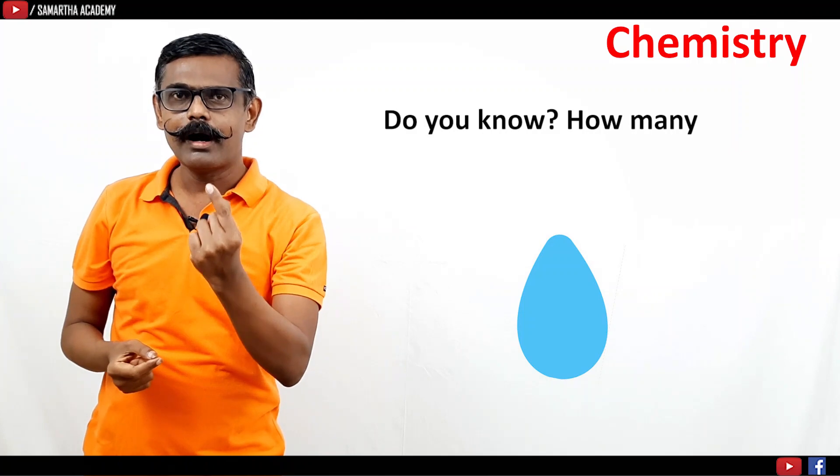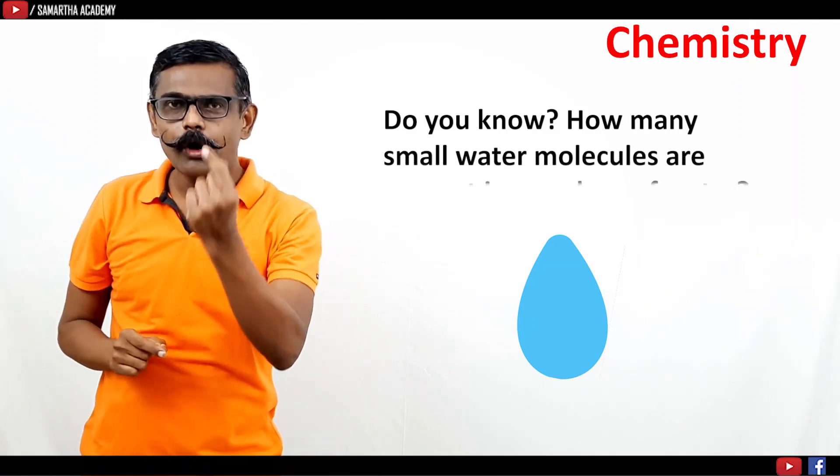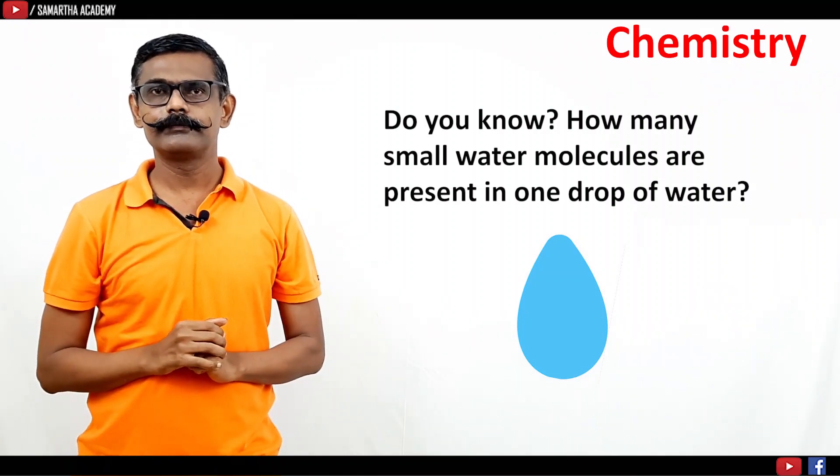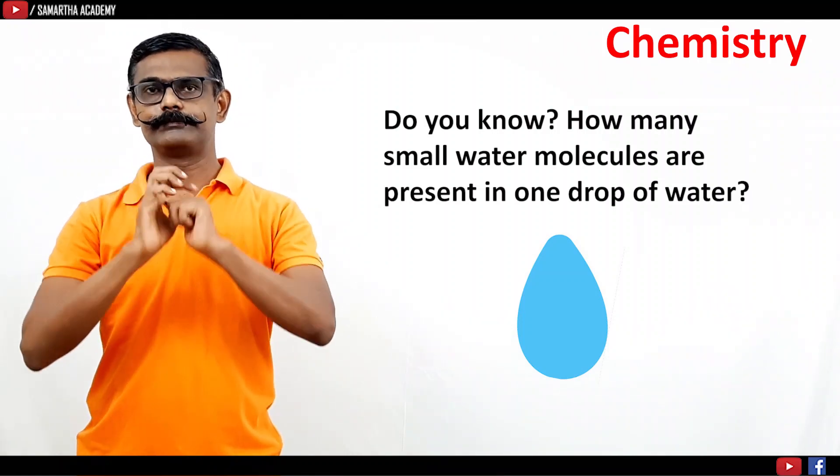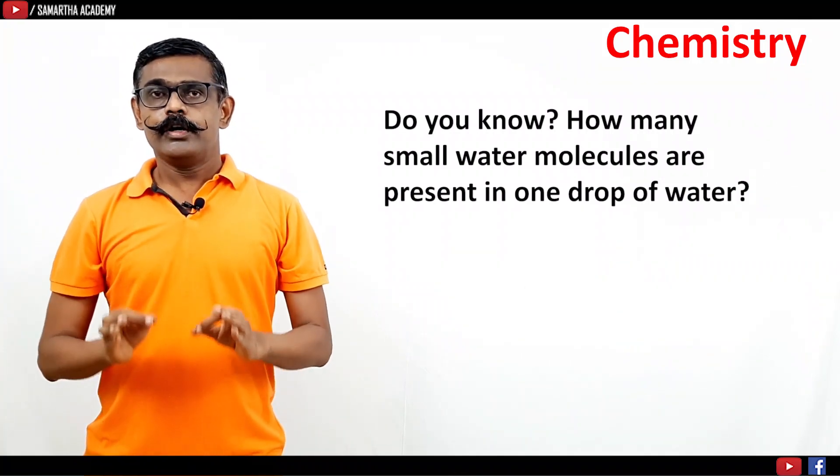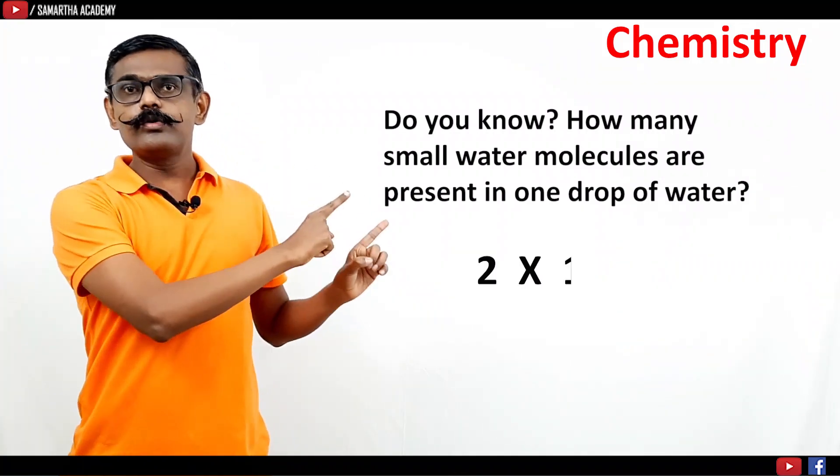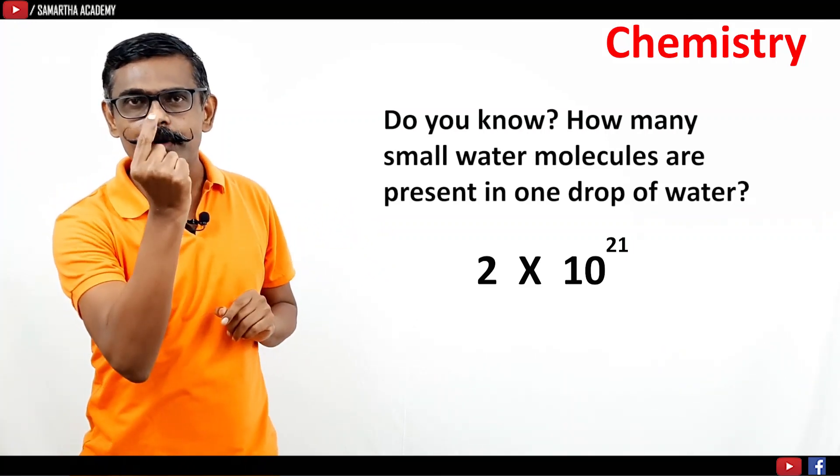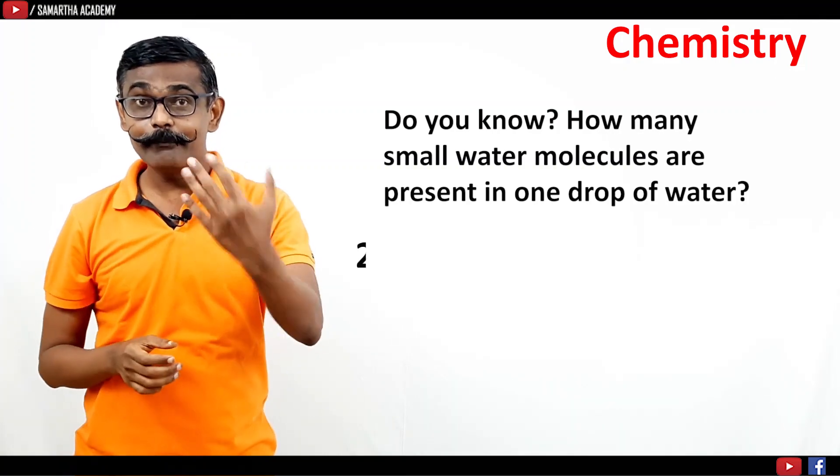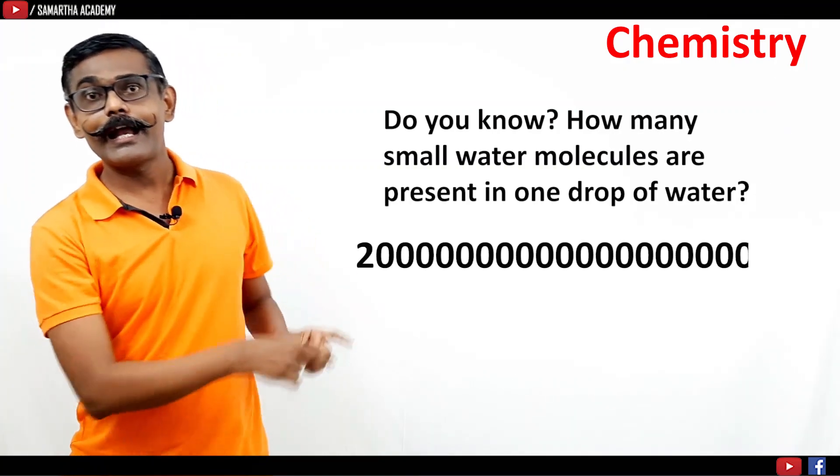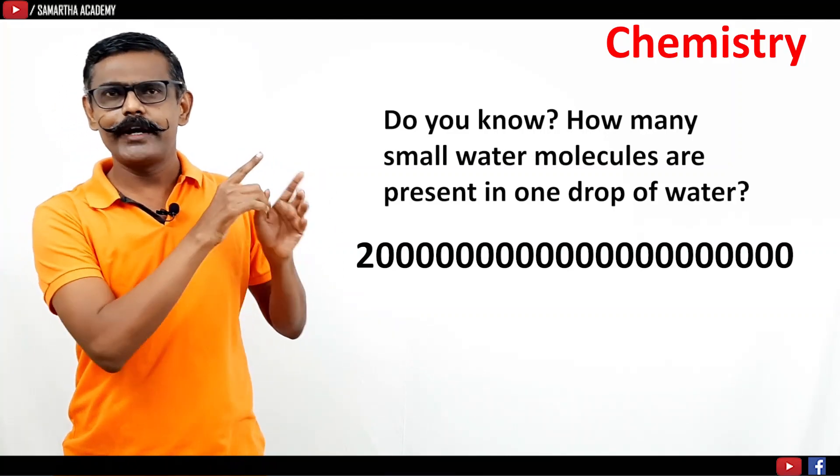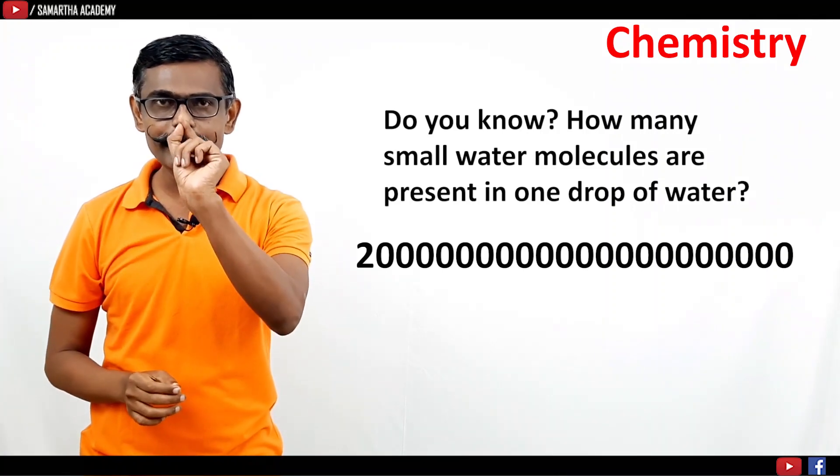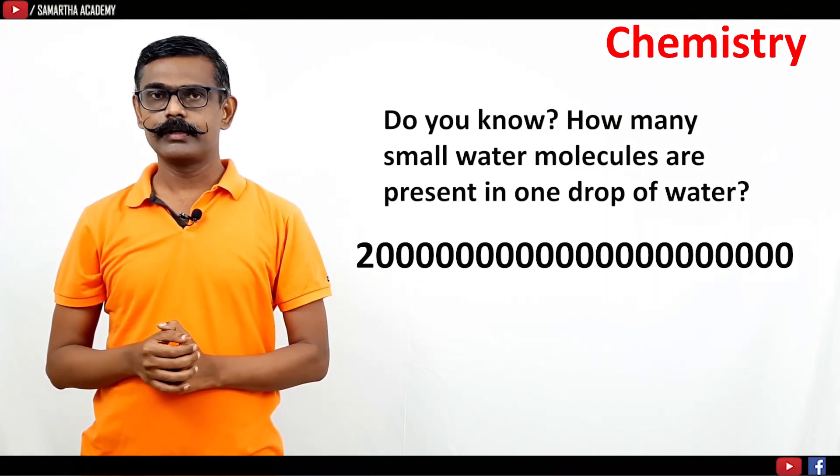Do you know how many small water species are there in one drop of the water? I give you the answer. 10 raised to 6 means million, 10 raised to 9 means billion. And I am talking about 10 raised to 21, such a vast, such a large water molecules are there in one drop of the water.